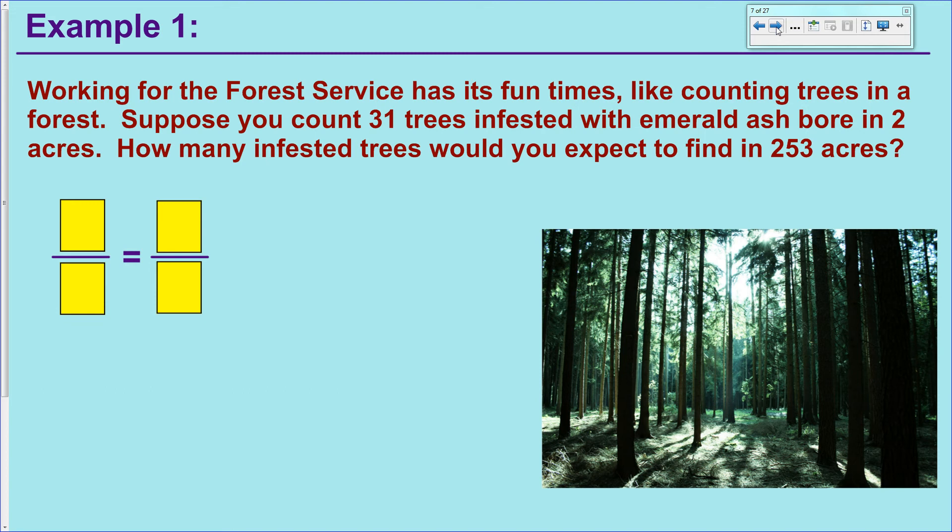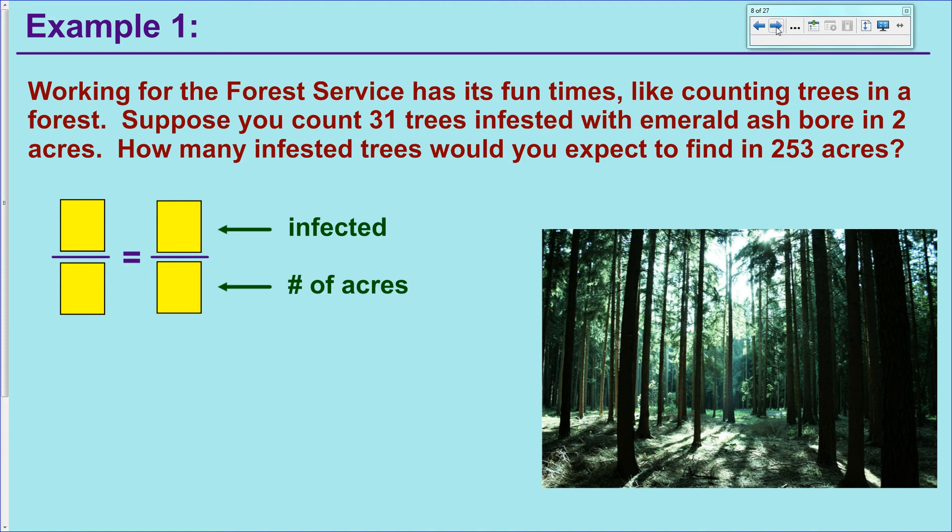Around here, we've got this emerald ash borer that kills all the trees. Say you're hired by the Forest Service to go count these things. You're not going to survey the entire forest, but you can probably deal with two acres. So in those two acres, you find 31 trees that are infested. And if the forest is 253 acres, how many trees would you expect to find that are infested in that larger area? I'd like you to pause the video and try to write a proportion equation for this. The way I did it was I did infected trees over the number of acres. So in the given, I was given 31 trees in two acres, and then I need a variable for the stuff I don't know, which is how many infected trees there are in 253 acres. And there's my proportion equation.